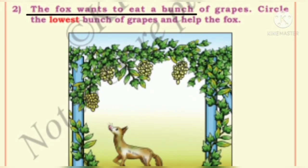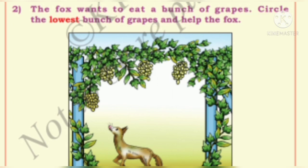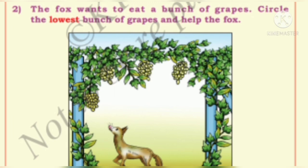The fox wants to eat a bunch of grapes. Circle the lowest bunch of grapes and help the fox. Children, in this picture we have four bunches of grapes. Which one is at the lowest level? This bunch is the lowest, so let us circle around it.